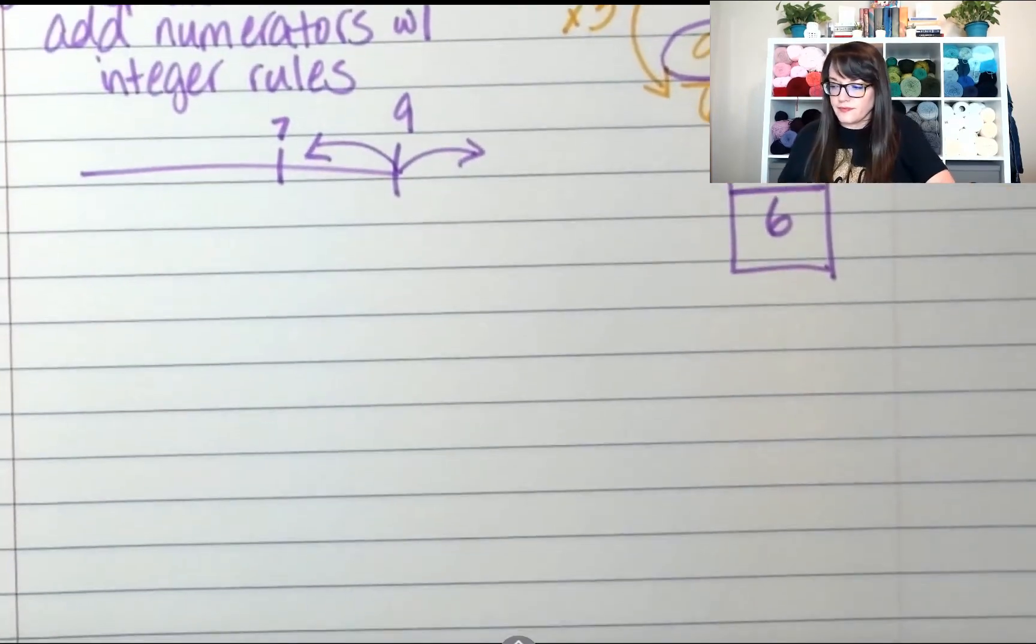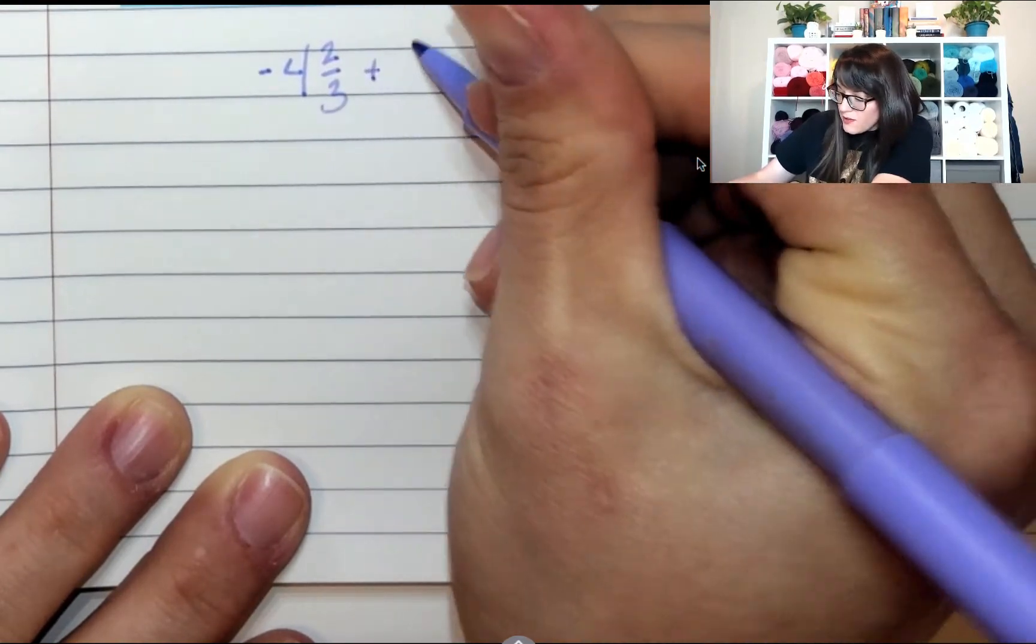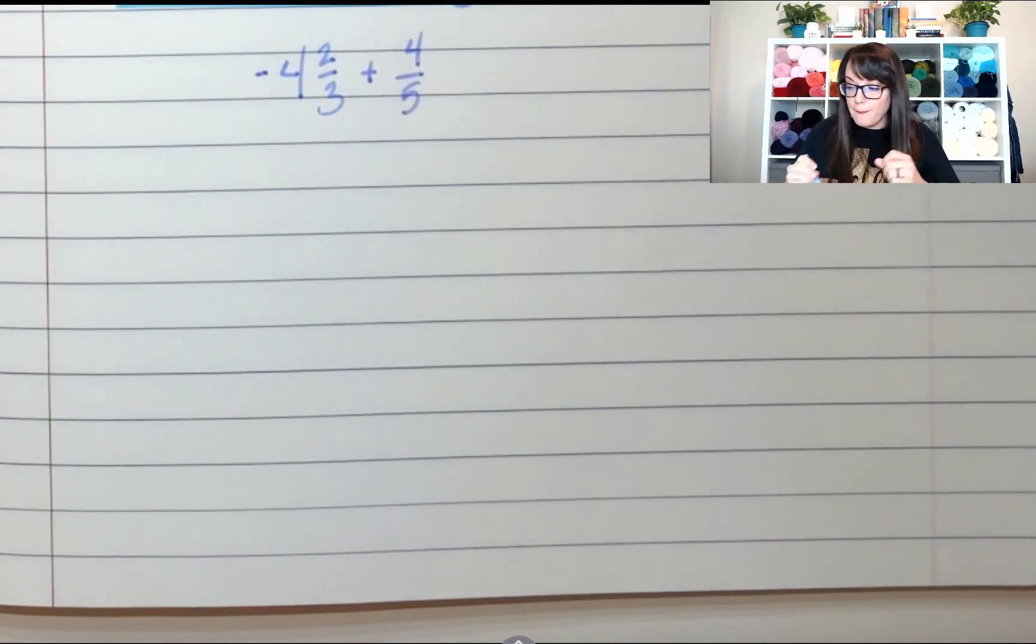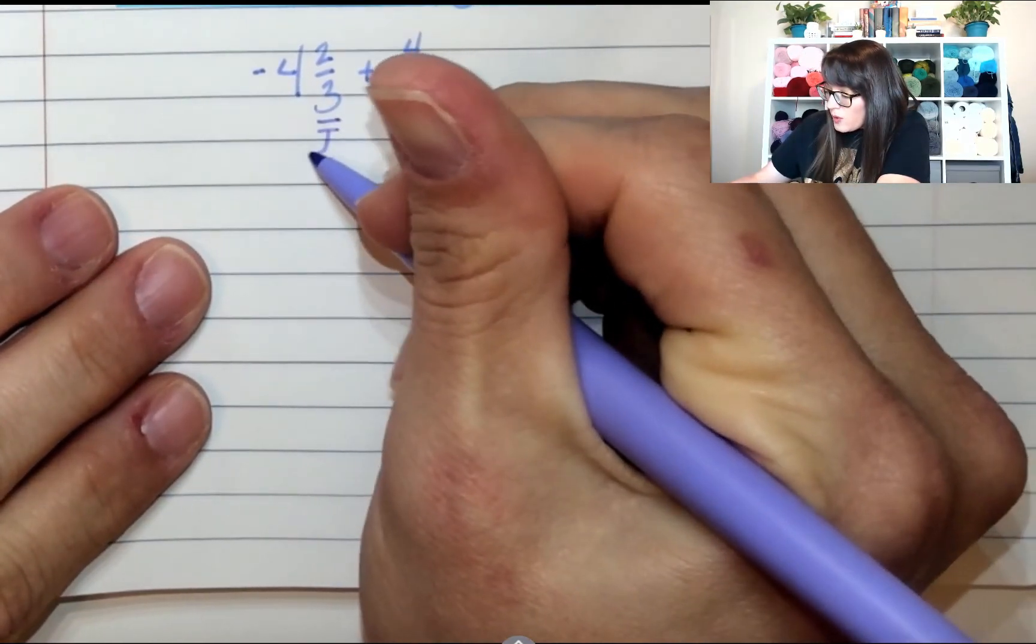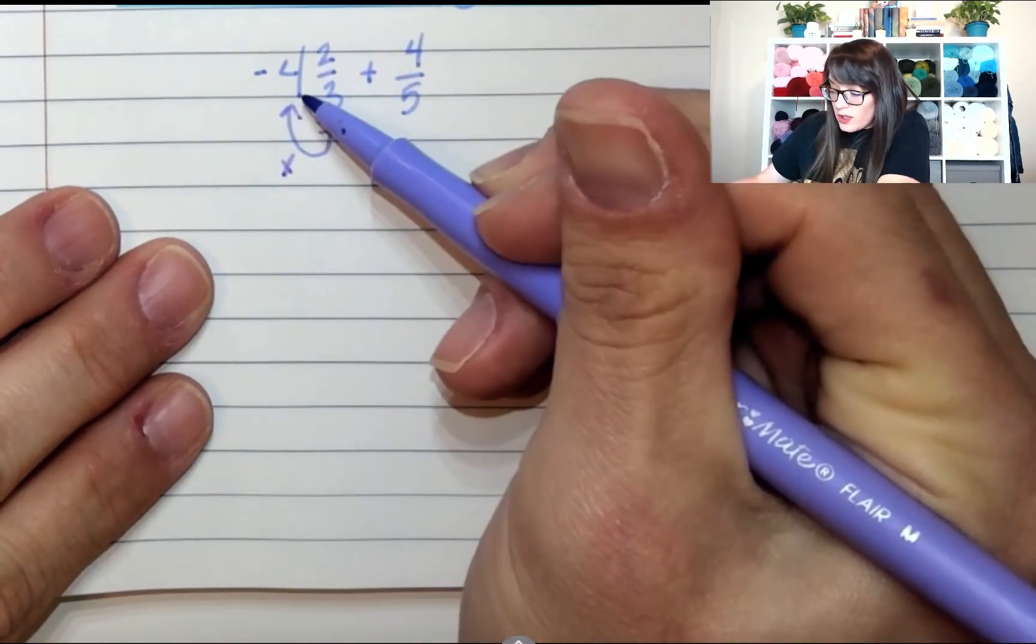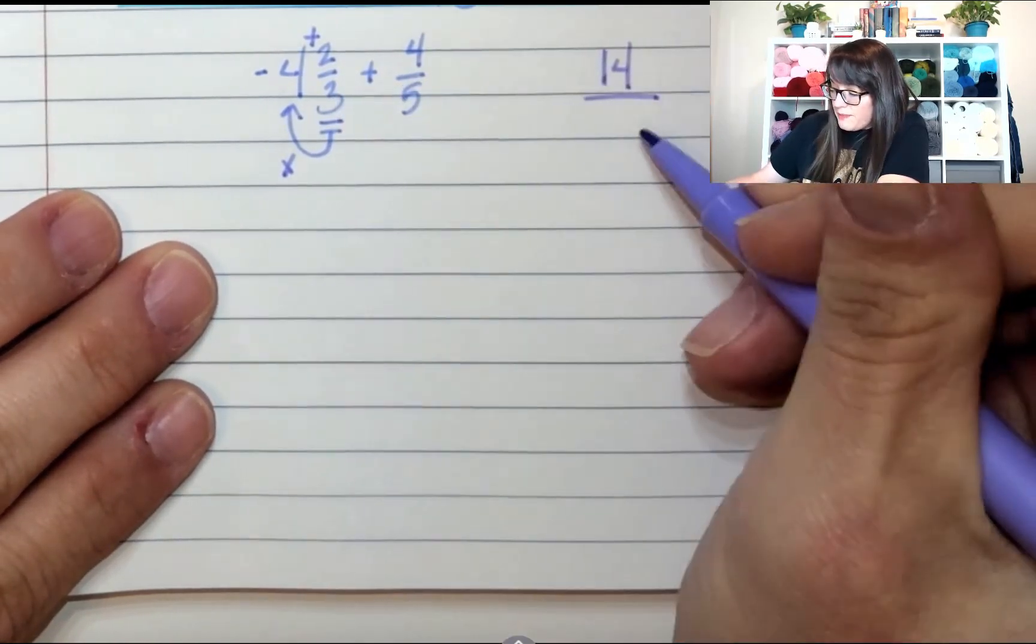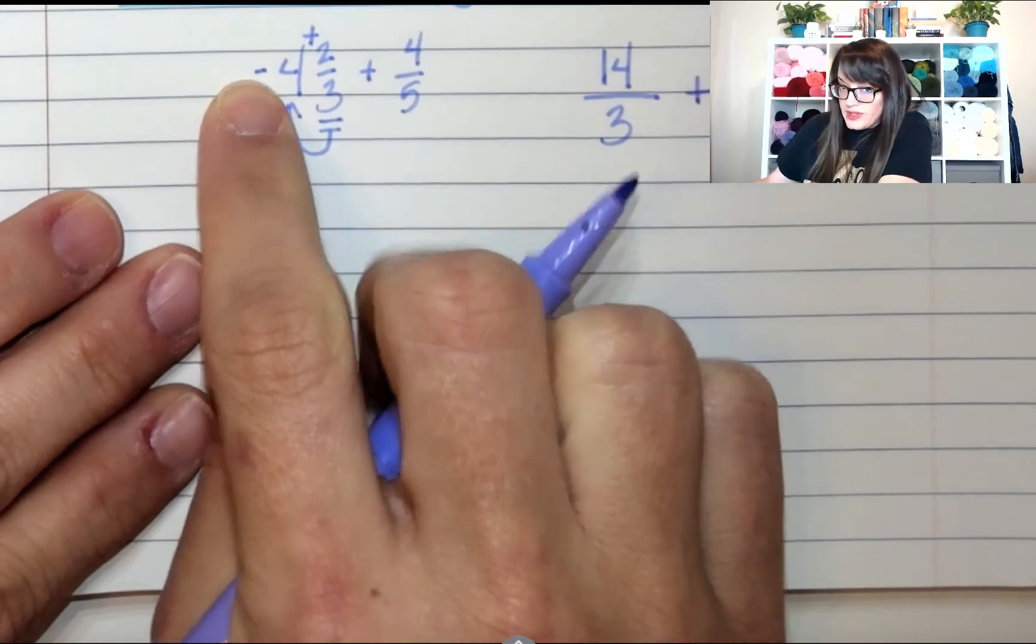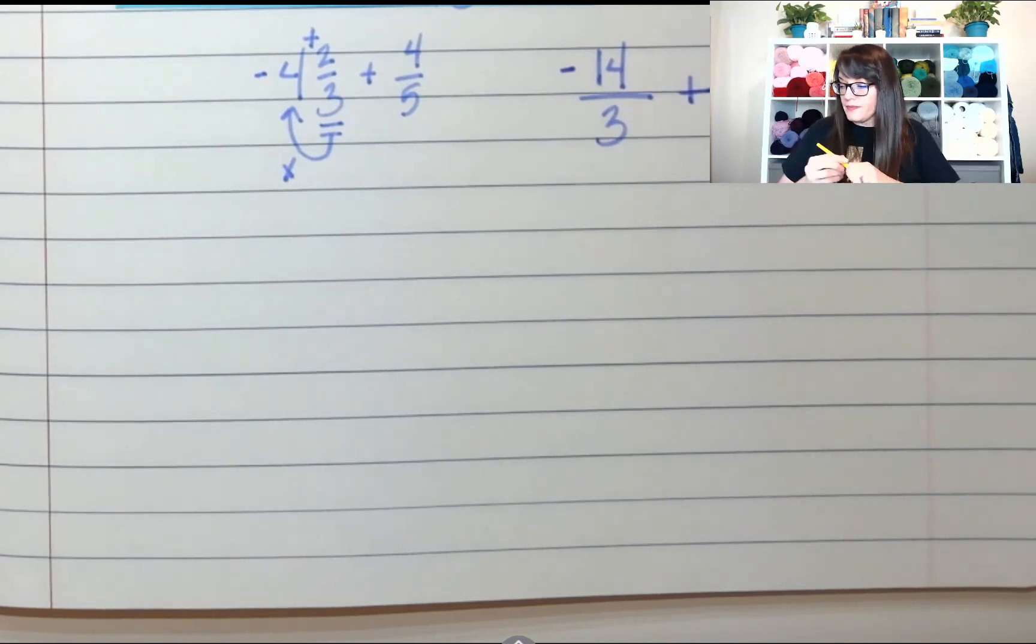Let's try another one. What if you had negative four and two thirds plus four fifths? Step one, I need to make this improper. So, three times four. So, take your denominator, multiply it by the whole number. That's 12. Plus two is 14. Keep the denominator. And then over here, I have four fifths. Don't lose the negative. This is still negative. Remember to assign the negative to the numerator.